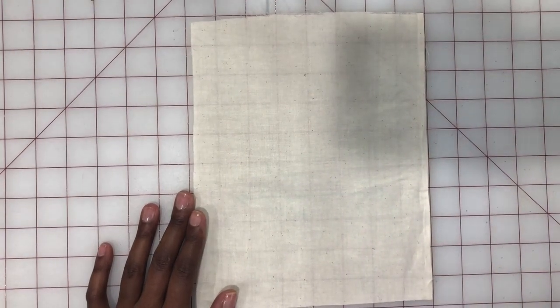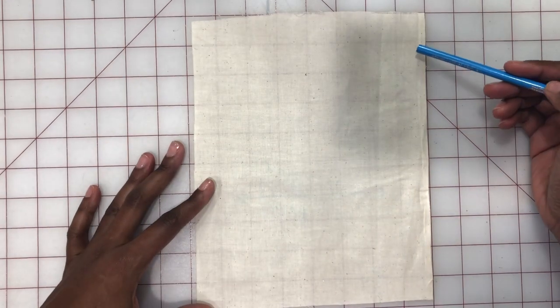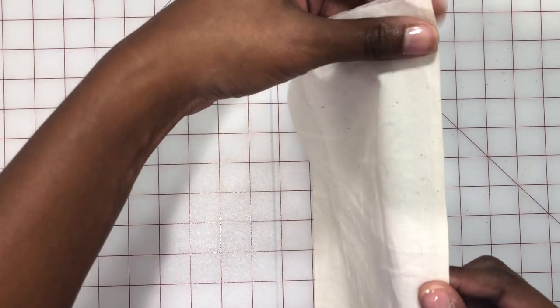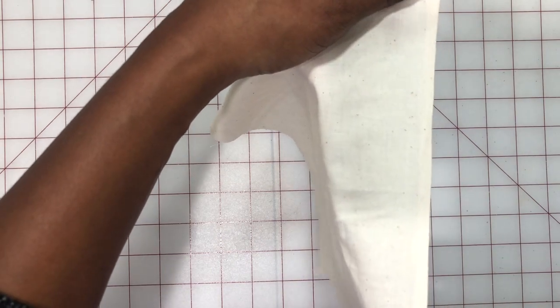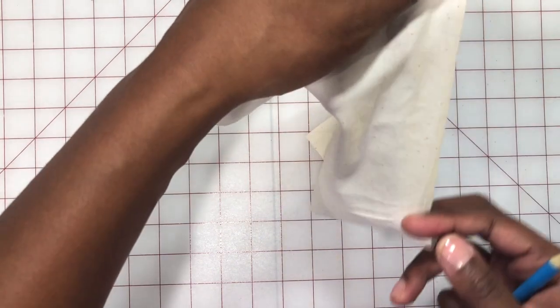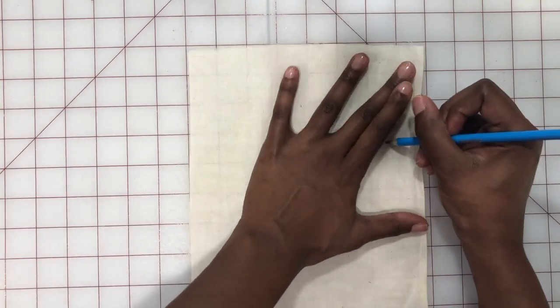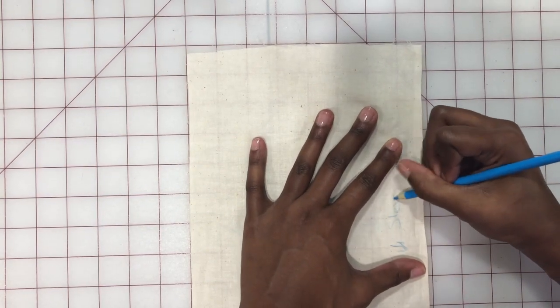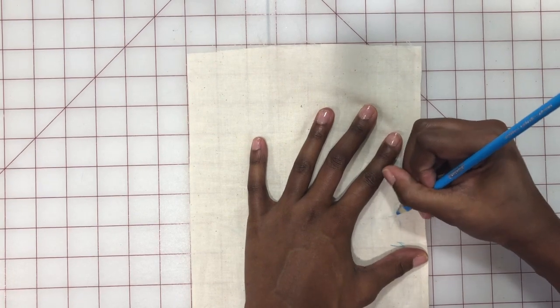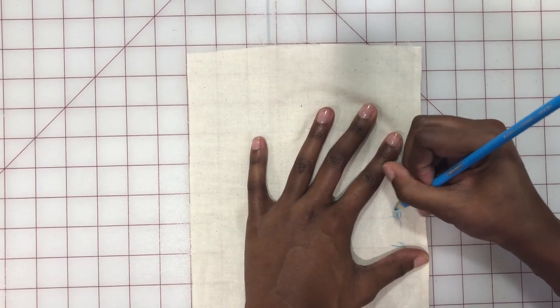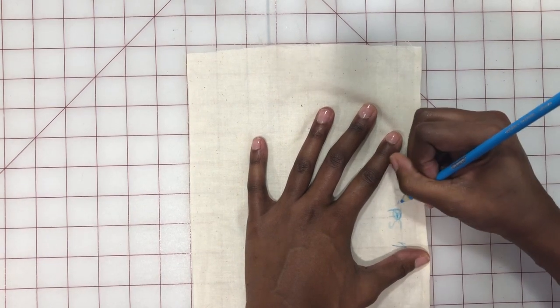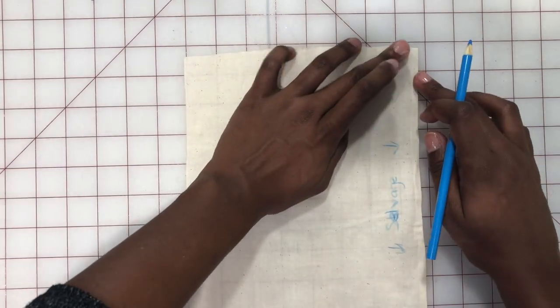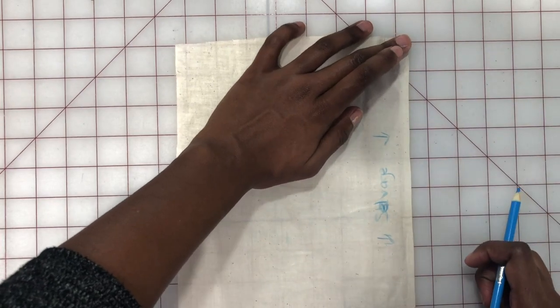So how do we identify grains? The first one is going to definitely be the selvedge, and this is the area here that looks a little bit more finished. It's often done in the manufacturing phase to close up the fabric so that there's not a lot of fraying. So we call this area the selvedge, and I am going to mark that and label it. So that's this area here. Again, it's the more finished area of your fabric.